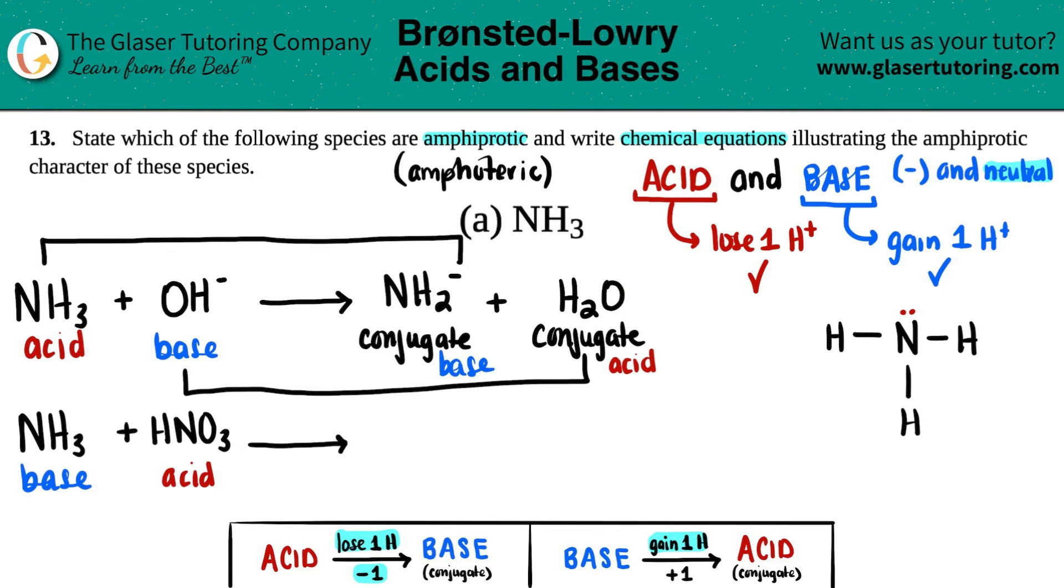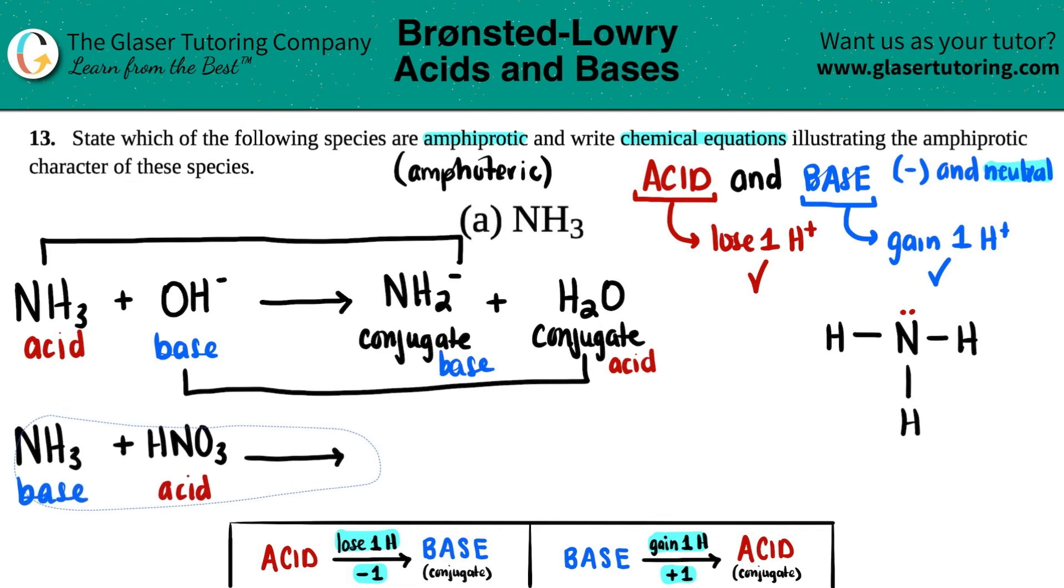Hydroxide was negative one originally, so negative one plus one is neutral - you don't have to write any numbers up top. We're done with the first one. Let's do the second one. Now, since you're treating NH3 ammonia as a base, it's going to turn into its conjugate acid.